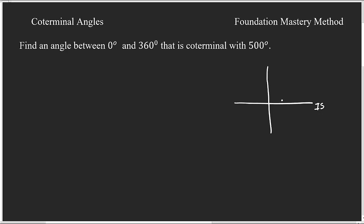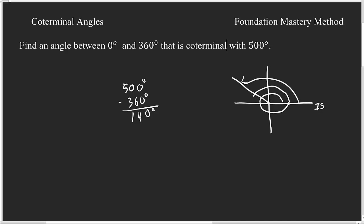500 degrees: first you go 360 degrees around, and then you still need to go 140 more degrees. So 140 degrees goes here somewhere. This 140 degrees is my positive coterminal angle — it is between 0 and 360 degrees.